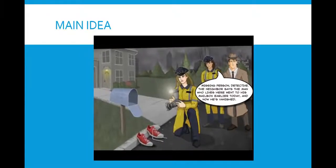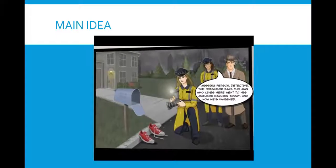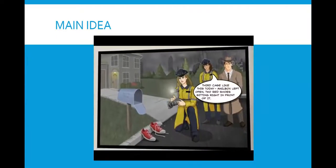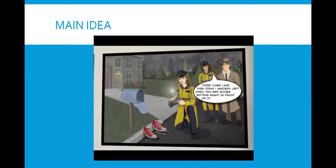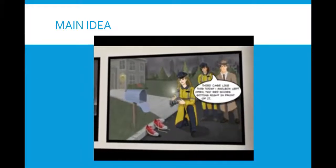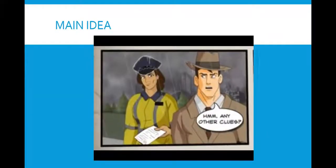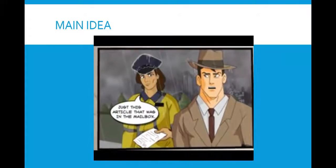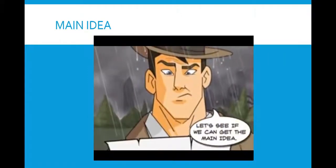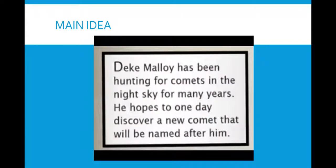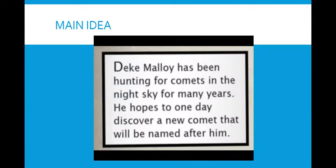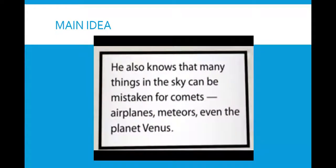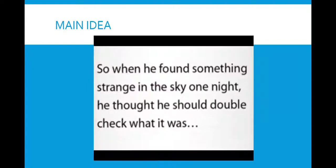Missing person. The neighbor says the man who lives here went to his mailbox earlier today, and now he's vanished. Third case like this today. Mailbox left open, two red shoes sitting right in front of it. Any other clues? Just this article that was in the mailbox. Let's see if we can get the main idea. Deke Malloy has been hunting for comets in the night sky for many years. He hopes to one day discover a new comet that will be named after him. He also knows that many things in the sky can be mistaken for comets. Airplanes, meteors, even the planet Venus. So when he found something strange in the sky one night, he thought he should double check what it was.